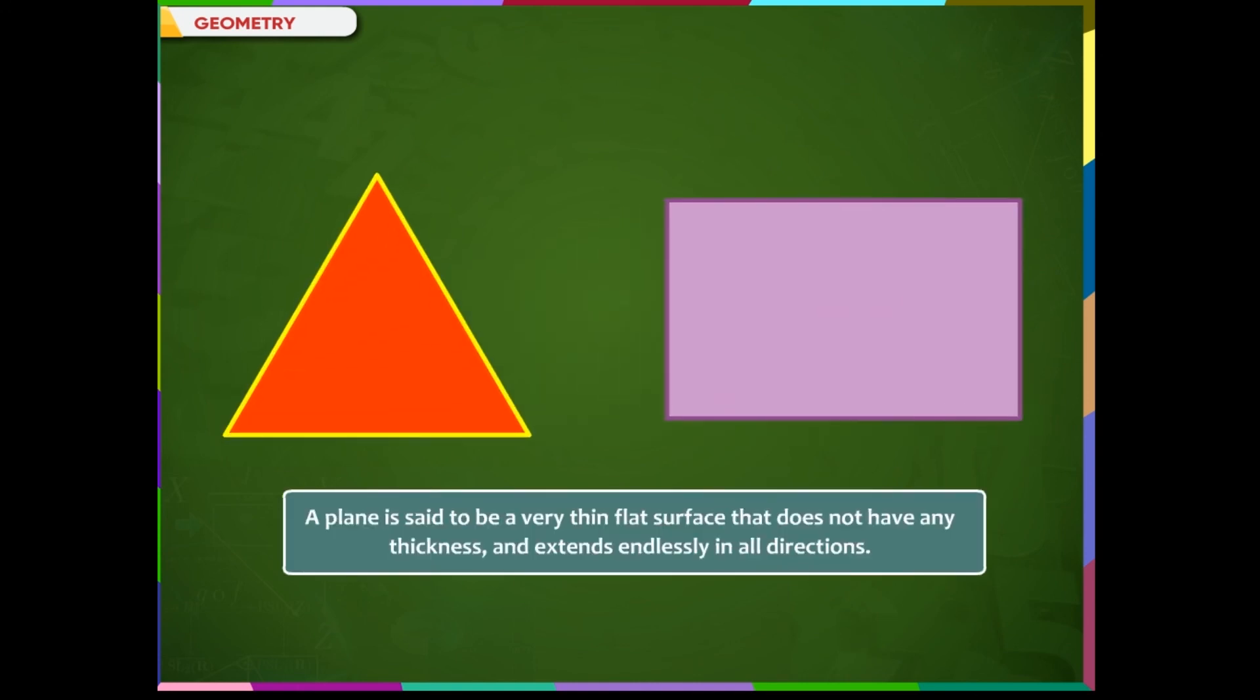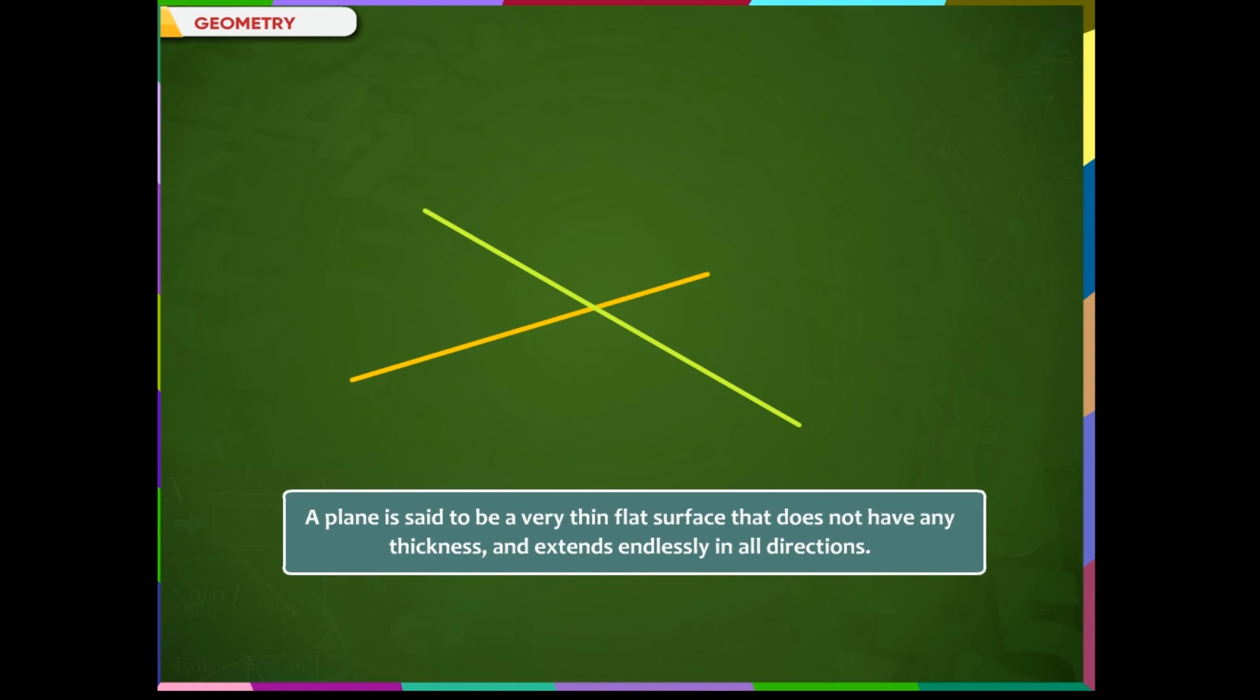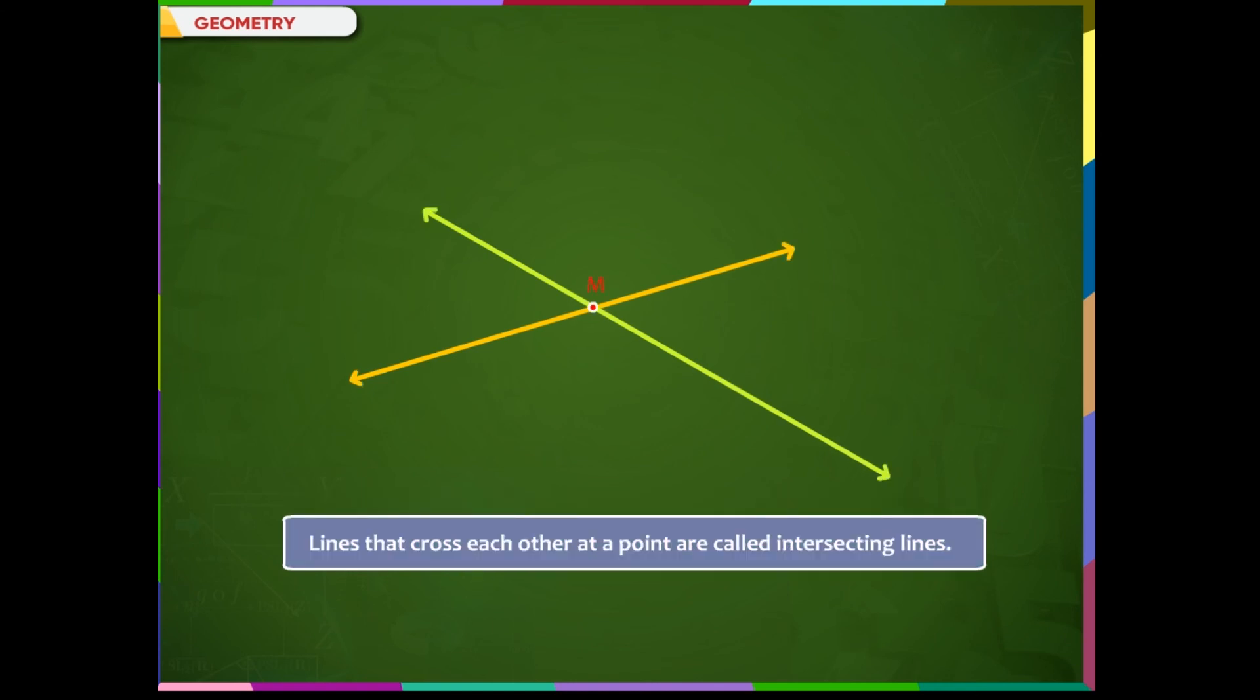5. A plane is said to be a very thin, flat surface that does not have any thickness and extends endlessly in all directions. 6. Lines that cross each other at a point are called intersecting lines. 7. Lines that do not meet each other are called parallel lines.